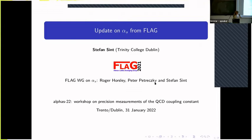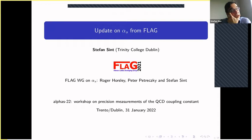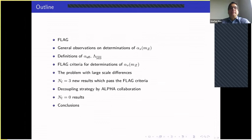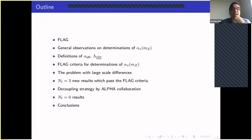Thank you very much. I wanted to report on our FLAG working group, of which I am the speaker. The other members are Roger Horsley in Edinburgh and Peter Petreczky in Brookhaven. Here is the outline of my talk: I first want to say a few words about FLAG, then make some general observations on determinations of alpha_s, get to the definitions of an effective alpha and the lambda parameter, how it is connected, and the FLAG criteria for determinations of alpha_s, then the problem with large scale differences, and then present some new results for three flavors.